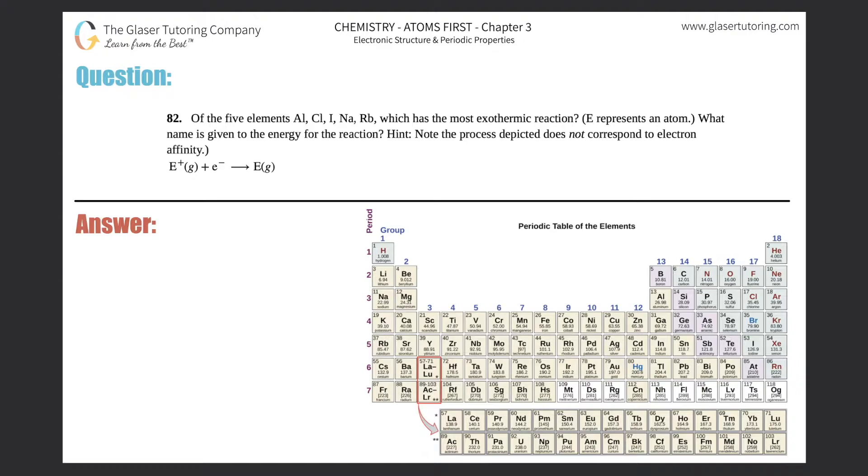Number 82. Of the five elements Al, Cl, I, N, and Rb, which has the most exothermic reaction? E represents an atom.